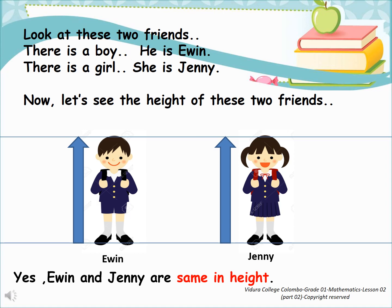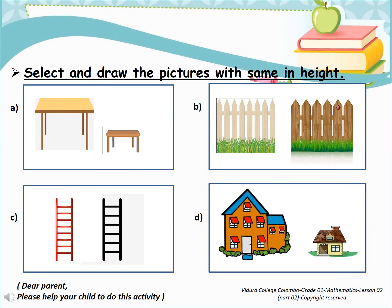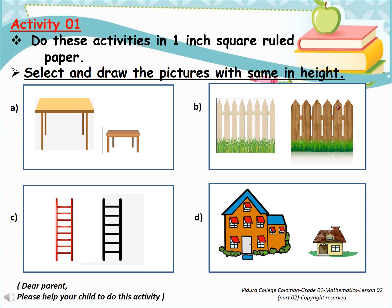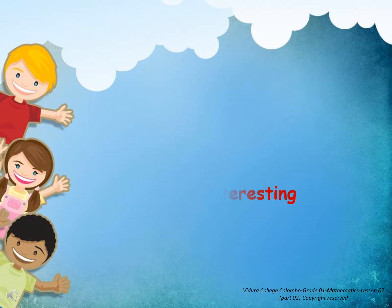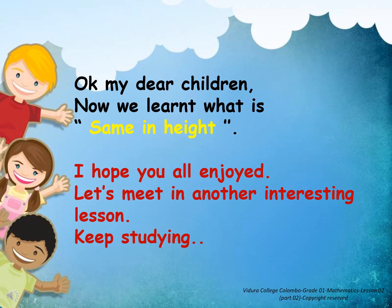Let's do some activities. Activity 1: Do these activities in a 1 inch square ruled paper. Select and draw the pictures with same in height. Activity 2: Draw two trees with same in height. I hope you all enjoyed.